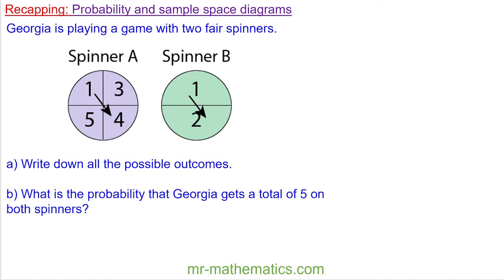Hello and welcome to our fourth lesson on probability. Today's lesson we're going to look at probability with Venn diagrams. But before we begin, let's recap how to use sample space diagrams. Join in to try this question here by pausing the video. So we have two spinners, spinner A and spinner B, and we're going to write down all the possible outcomes. Like we learned last lesson, we can do this through a sample space diagram.